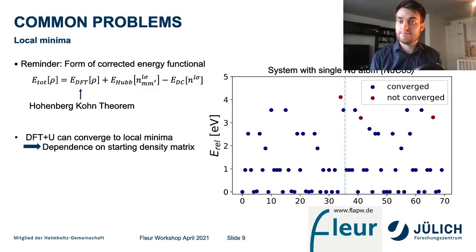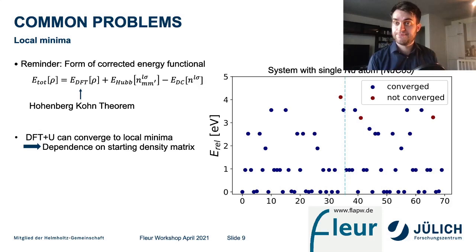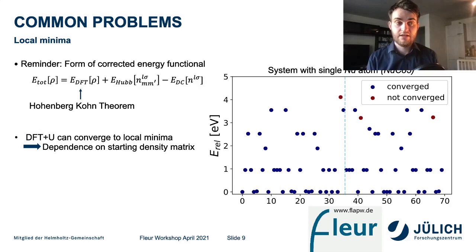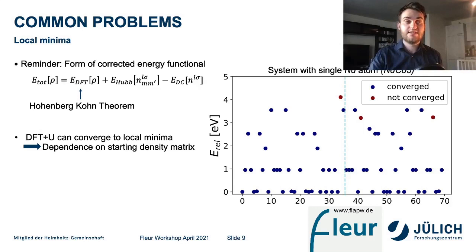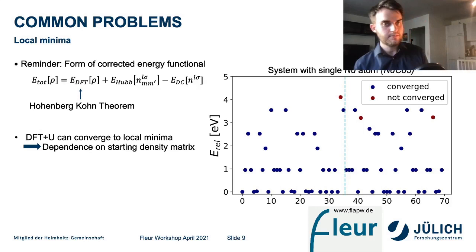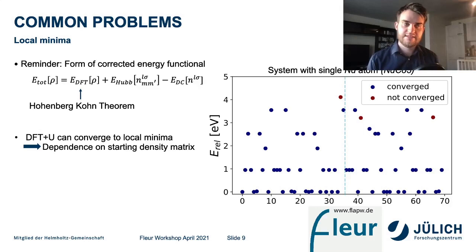This depends on many factors. For a system with a single neodymium atom with three electrons in the F shell, different SCF calculations started from different initial density matrices converge to distinct states. We get the ground state, but also states around one electron volt above it, and some calculations that don't converge at all after 200 SCF iterations. This is something you need to be very careful about.